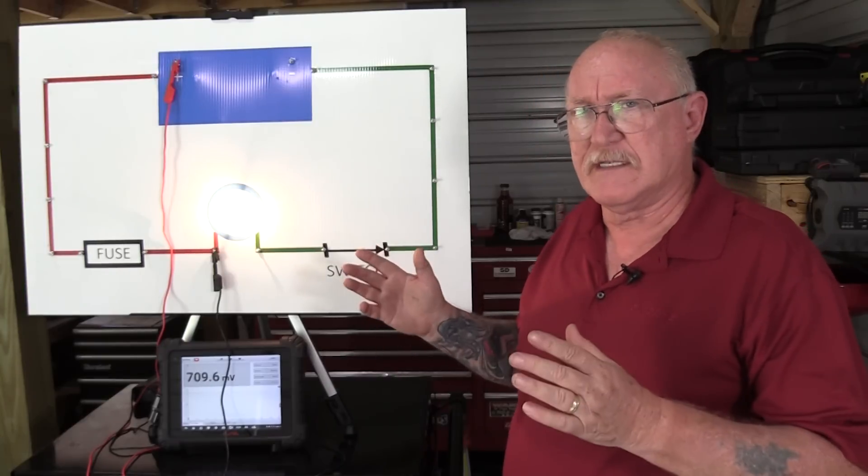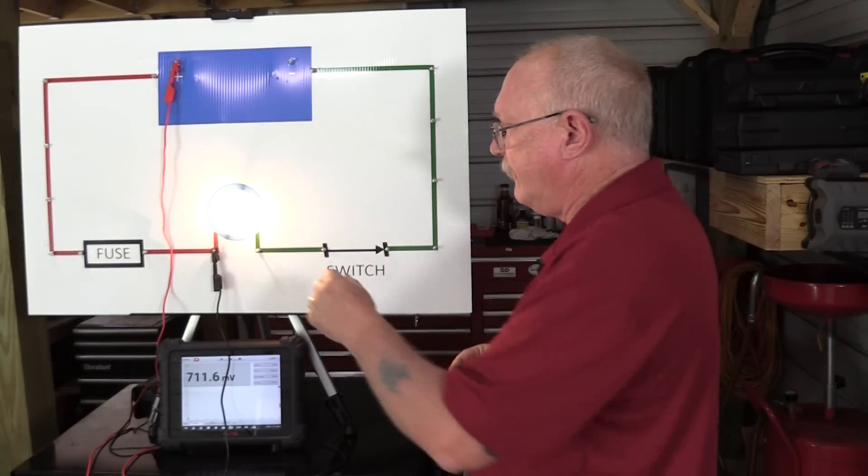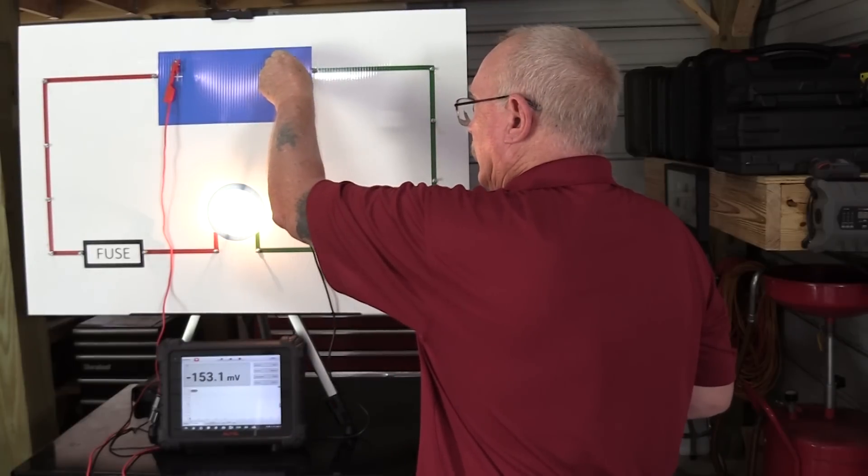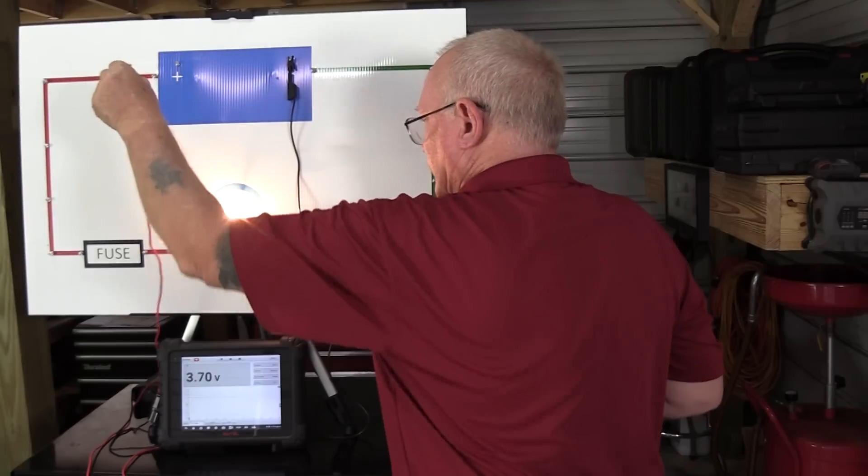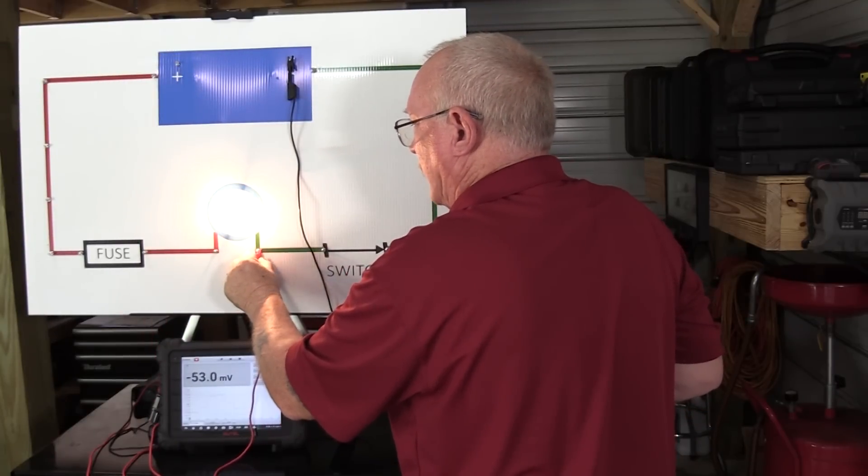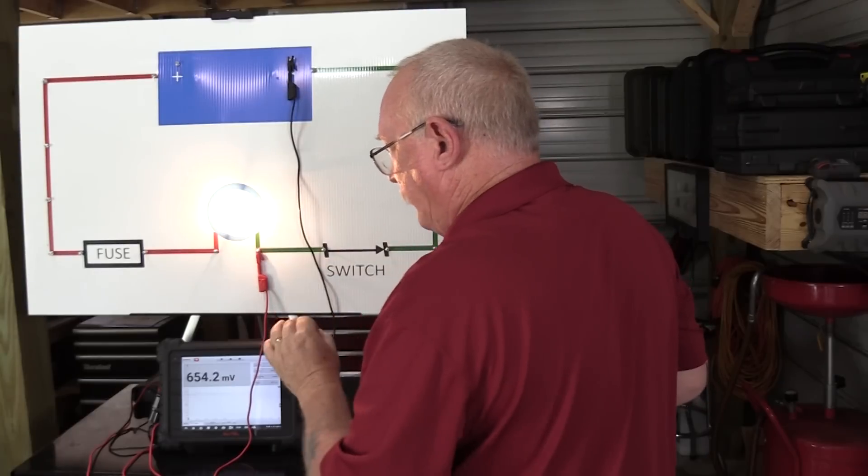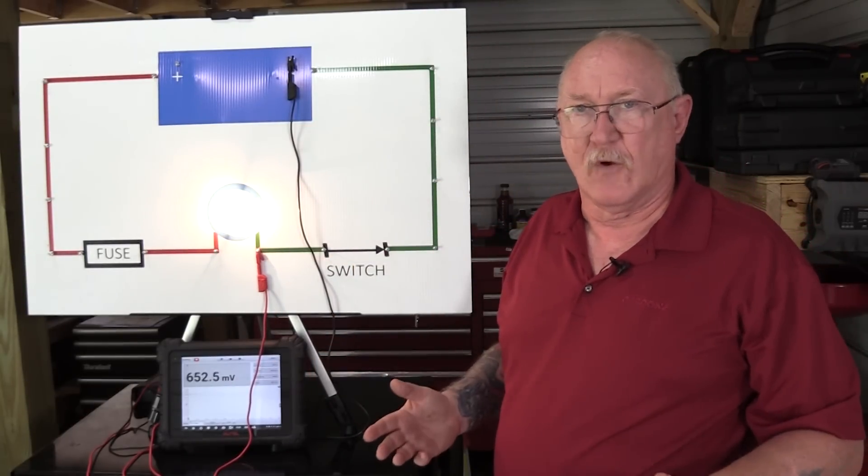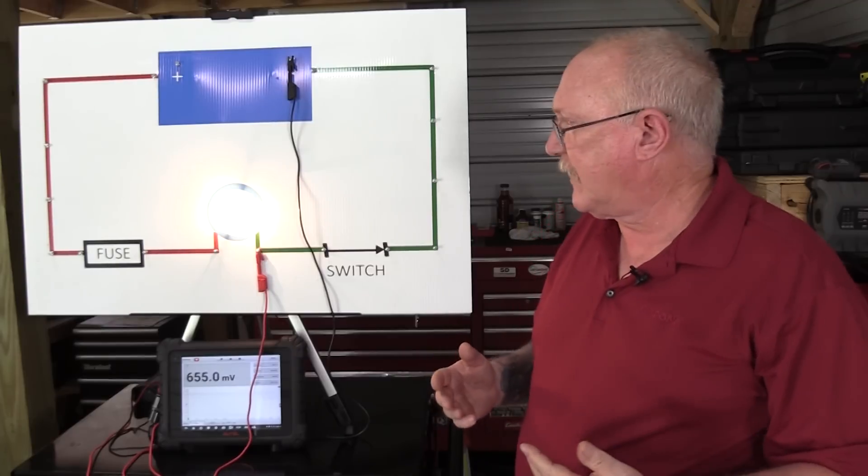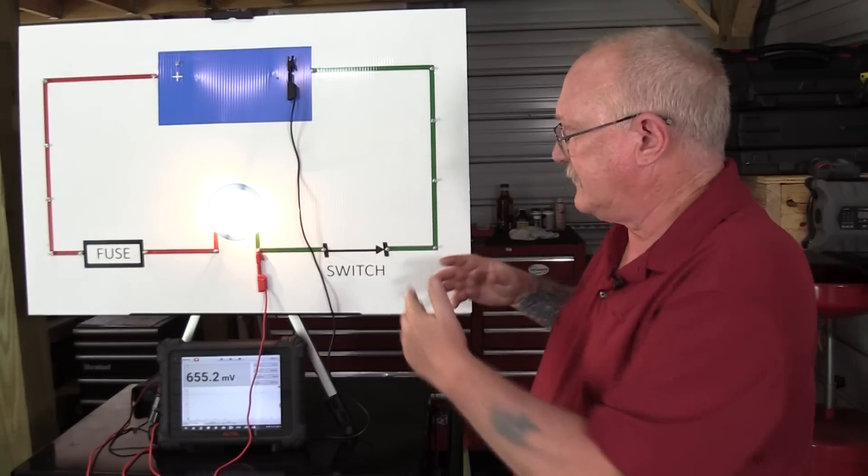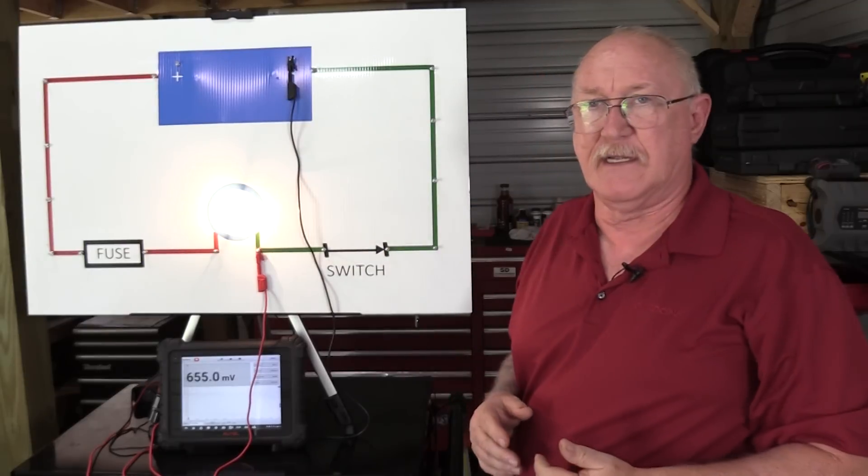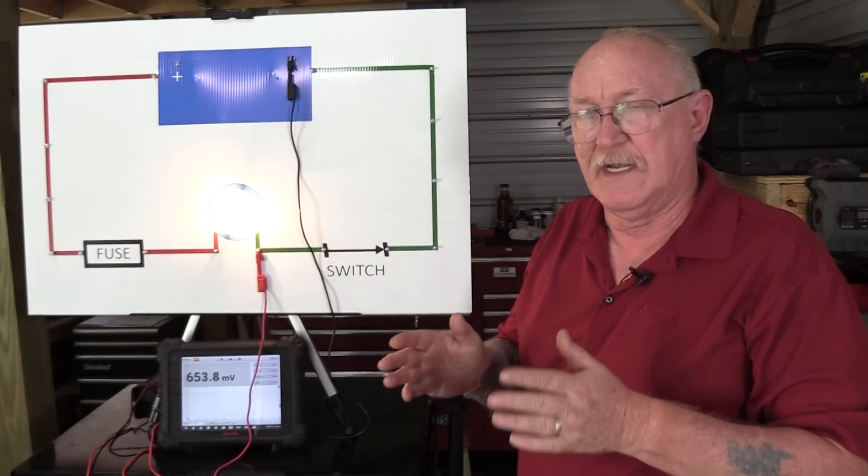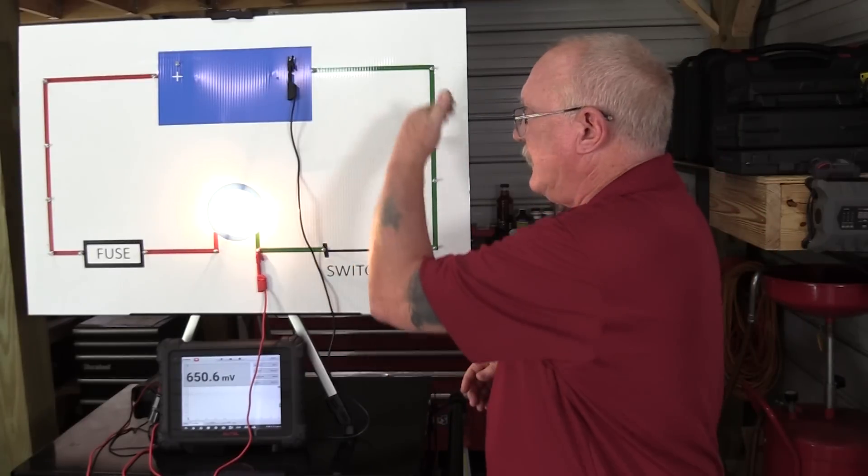Now if I want to check the ground side, I'm going to do the same thing. Only now, I'm going to move my ground lead, my negative lead, to the ground post of the battery and use my positive meter lead at the ground side of the load as close again as I can possibly get it. And again you see a similar result, about 600 or so millivolts. That's the voltage drop that we have left to take care of all these little sources of resistance getting back to the battery.